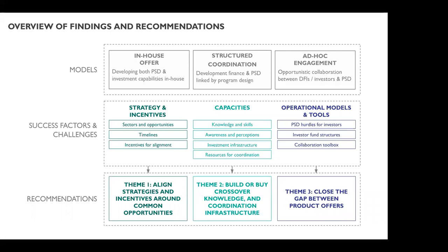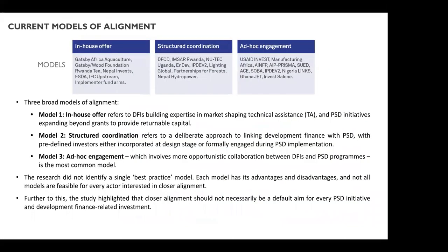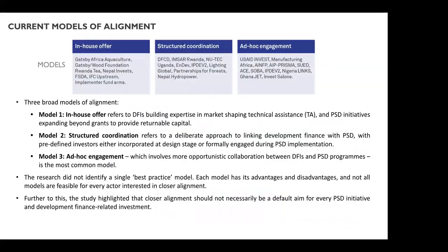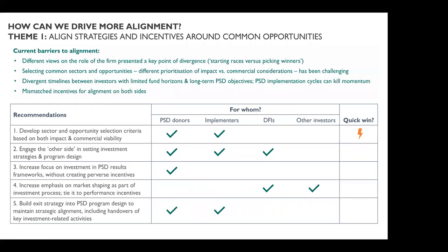The three recommendations are: one, trying to align strategies and incentives around common opportunities between PSD and investment; two, building or hiring crossover knowledge between PSD and investment and investing in coordination infrastructure; and three, closing the gap between product offers — meaning what each side can offer the other in terms of benefits to collaboration.